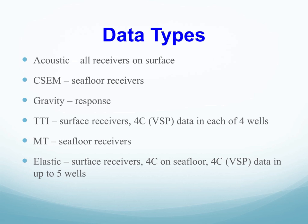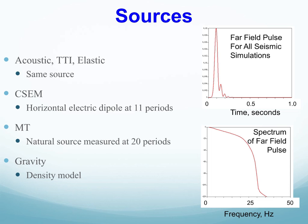For all the seismic simulations, we used the same source pulse. Instead of defining the actual source pulse, we defined what the far-field pulse shape should look like, and asked vendors to put in the appropriate source time history within their simulation code. The spectrum of that far-field pulse shape shows spectral content between about 2 Hz and 25 Hz. Controlled source EM used a horizontal electric dipole placed near the seafloor, activated at 11 different periods. The magnetotelluric is a natural source measured at 20 periods. Gravity is simply based on the density model.